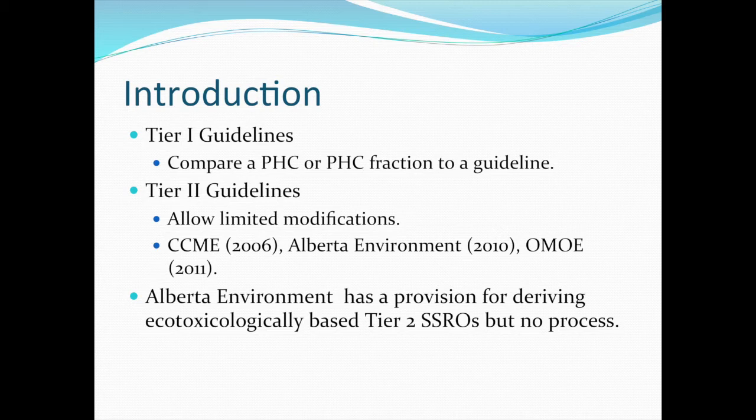Those limited modifications are discussed in CCME 2006, as the precursor to the Alberta Environment 2010 document, and subsequently in the Ministry of Environment document of 2011. Although modifications are possible for Tier 2 guidelines, no modifications are possible for the soil contact guideline, which is the primary driver of most guidelines because the soil contact guideline is the most sensitive. What we're going to be talking about today is a way to modify the soil contact guideline based on site-specific attributes.